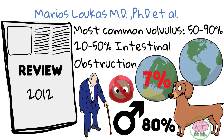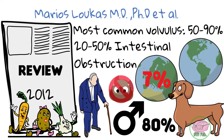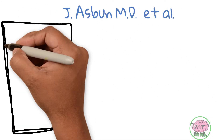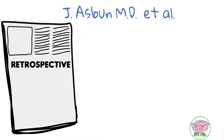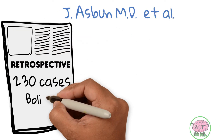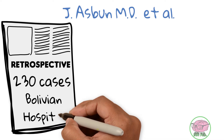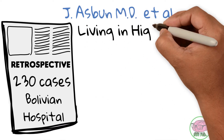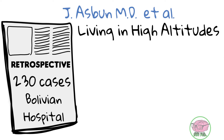It has also been associated with a high fiber diet. Another study by Aspen and collaborators was a retrospective study including 230 cases at a Bolivian hospital, which suggested that living at high altitudes may be one of the causes of sigmoid volvulus.